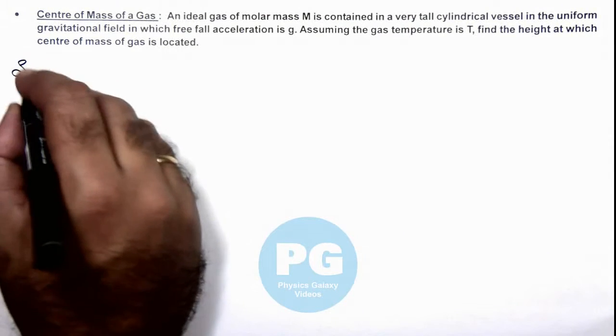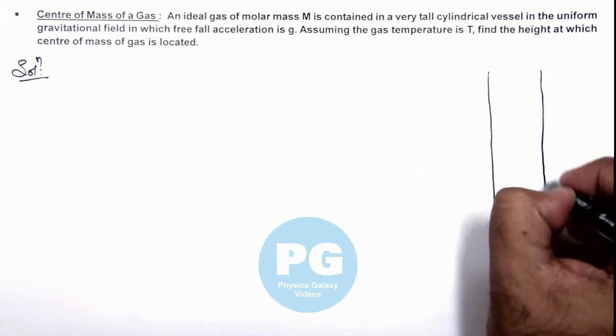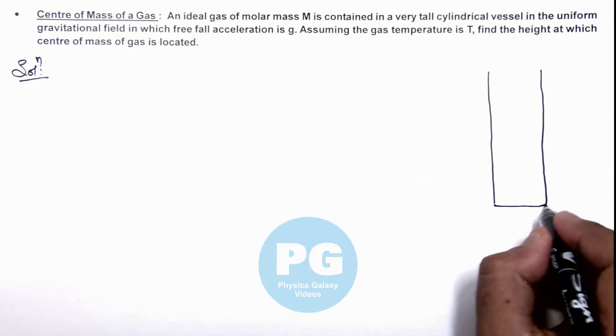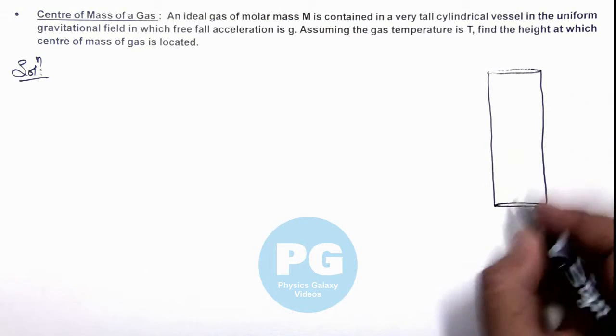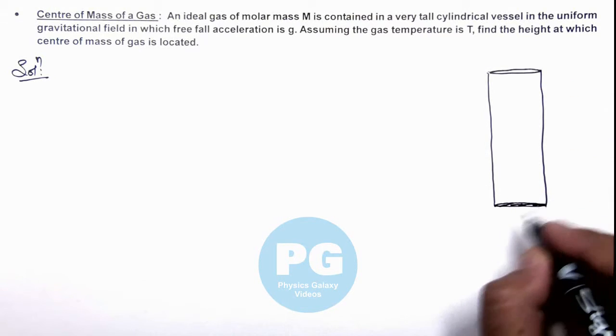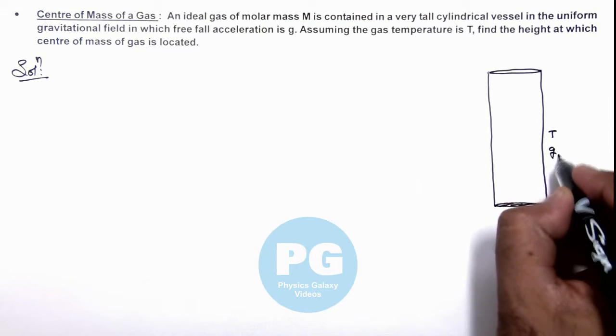Here we can draw the situation. We are given a tall cylindrical vessel, and in this vessel we are given that gas temperature is T and acceleration due to gravity is g.